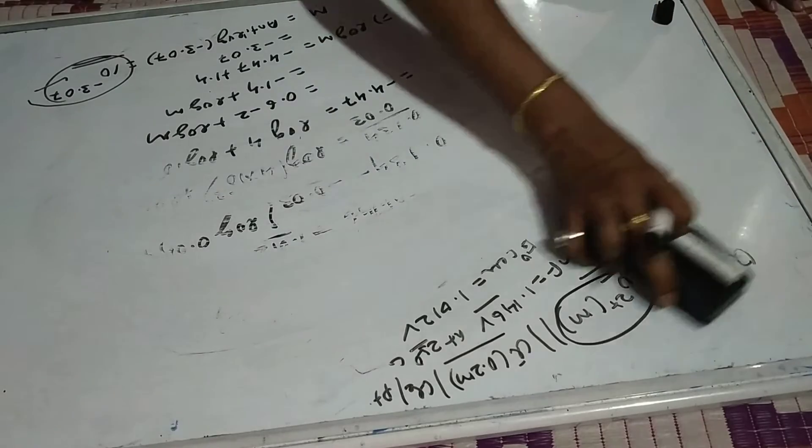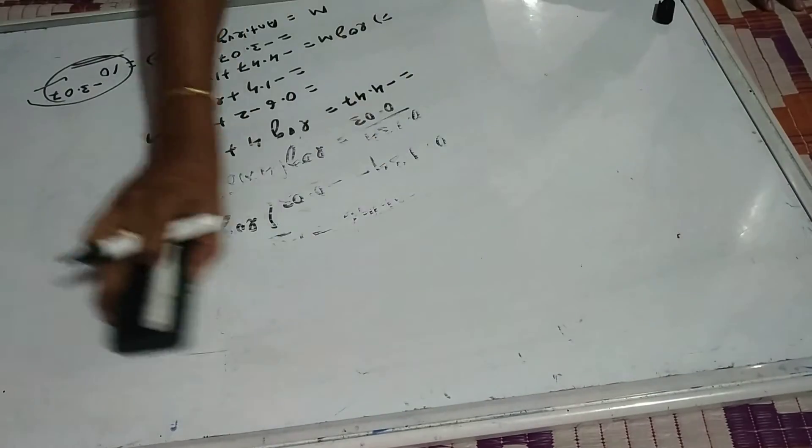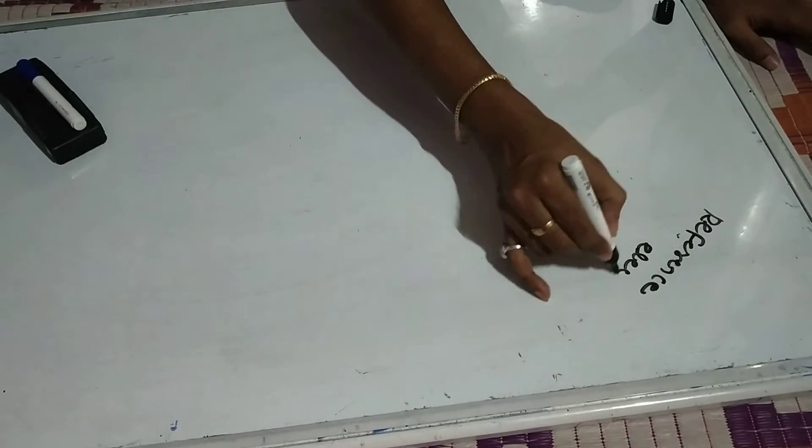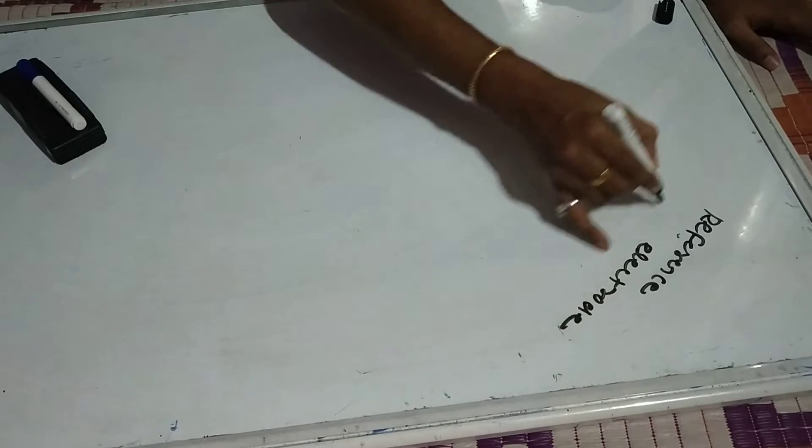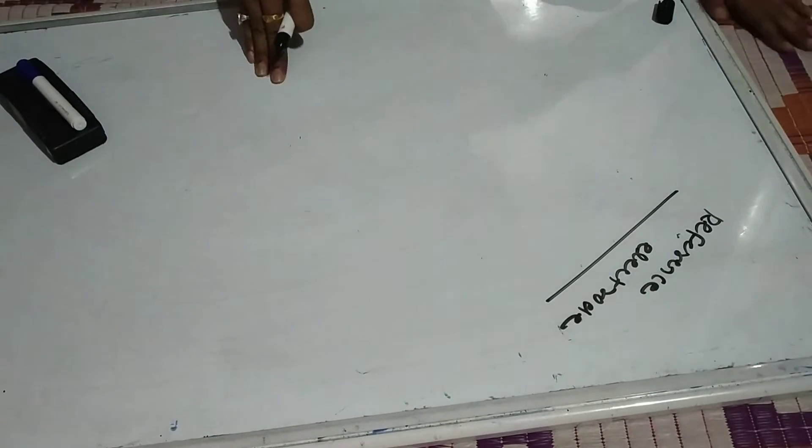Now we have a good idea about the Nernst equation and how it is applied for the calculation of cell potential and for the calculation of concentration of an unknown solution. It also helps to calculate the equilibrium constant and solubility product. Now I will go to the next topic, which is the reference electrode.